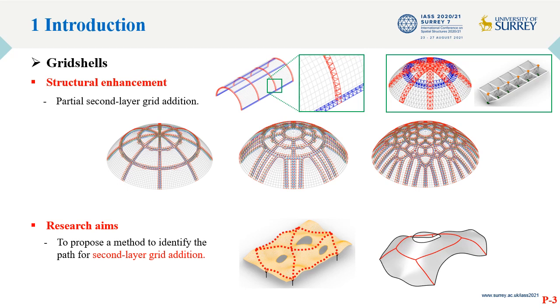Here are some examples of gridshells with partial double layers. The challenge is the identification of the configuration paths for the second layer grids, especially when freeform geometry is considered, where irregular boundary and drastically varying curvature might be present.